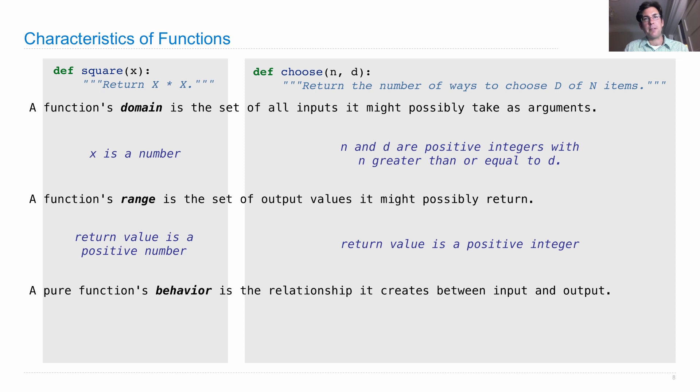The behavior is very similar to the doc string. The behavior of square is to return the square of the input, and the behavior of choose is to return the number of ways to choose d out of n items. Just think about these three properties.